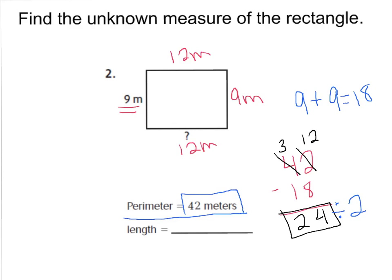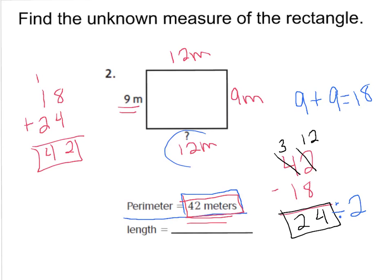Let me check my answer. To find the perimeter, you add up all your sides — they told me the perimeter is 42. I know 9 plus 9 is 18, and 12 plus 12 is 24. Adding 18 and 24: 8 plus 4 is 12, carry 1, then 1 plus 1 is 2, plus 2 is 4. I got 42 meters, just like they told me. My unknown measure was 12 meters.